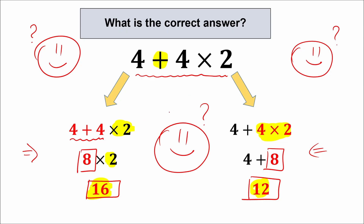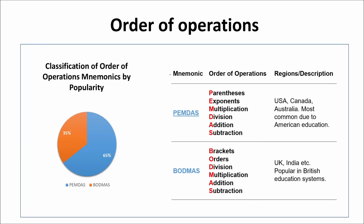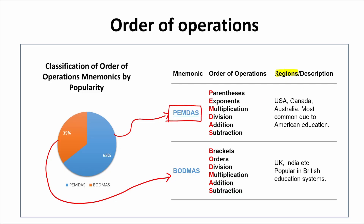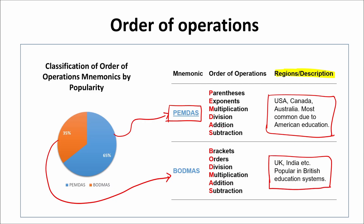We have to consider which order of operation to follow. There are two most popular orders of operation in the world: about 65% of people prefer PEMDAS, and 35% prefer BODMAS. There is no difference between them — it depends on where you live. People in some regions use PEMDAS; in the UK and India, people use BODMAS. But it's the same meaning, the same order of operation. Each letter stands for something different — for example, B stands for brackets and P stands for parentheses — but the meaning is absolutely the same.